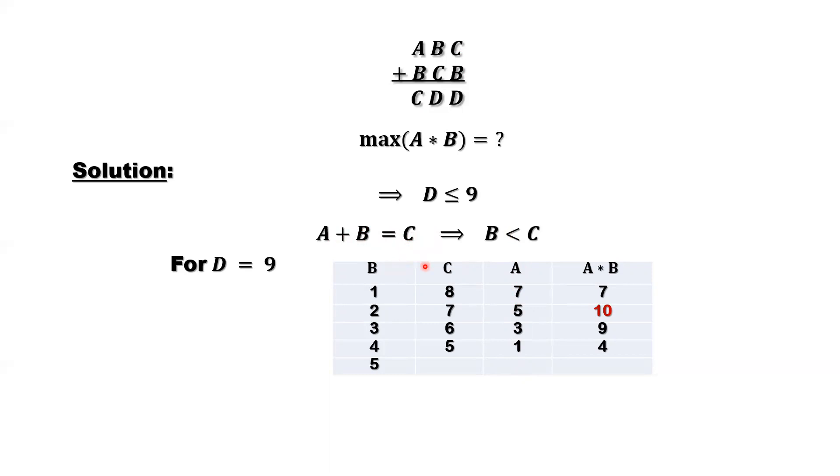So now we have A here, we have B here. We can find the last column. 7 equals 1 times 7, right? A times B here is 7. And here 5 times 2 is 10, 3 times 3 is 9, 1 times 4 is 4. So now here we stopped here. Let me mark it.